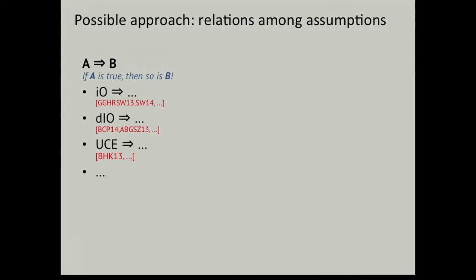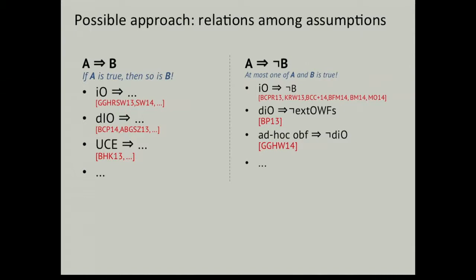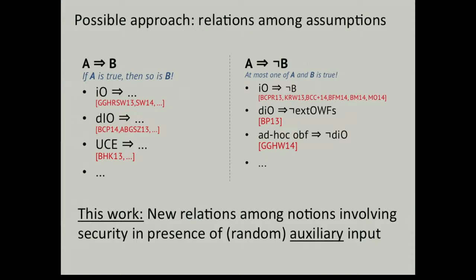We have a lot of different results showing, on the one hand, implications of the form A implies B — so showing that if something exists, we can get a lot of exciting things out of it, for example from I.O. or D.I.O. But there's also a series of equally exciting results that show things of the type A implies not B. They show that under the assumption that one of these notions exists, something else that we might want to have doesn't exist. The important message is that we have pairs of notions for which we know at most one of them can exist.